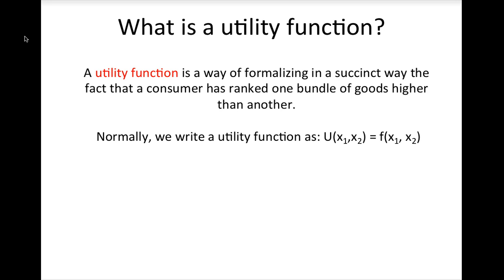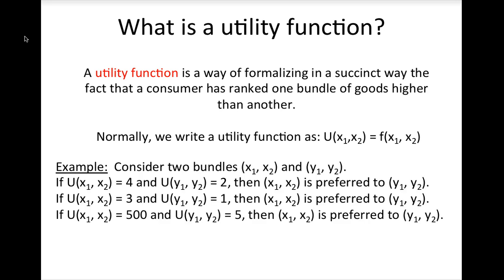Note that this utility value does not tell you how much a consumer likes a given bundle. All it tells you is whether one bundle is better, worse, or indifferent to another bundle. Let's consider an example. Consider two bundles, x1, x2 and y1, y2. If the utility from the x bundle is 4 and the utility from the y bundle is 2, then all we know is that the x bundle is preferred to the y bundle. Similarly, if the utility from the x bundle is 3 and the utility from the y bundle is 1, then all we know is that the x bundle is preferred to the y bundle.